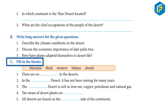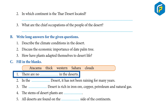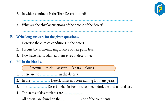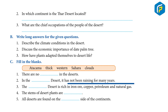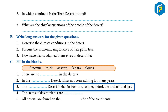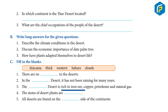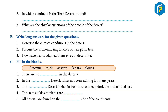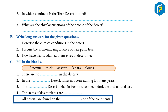C. Fill in the blanks: 1. There are no dash in the deserts. 2. In the dash desert, it has not been raining for many years. 3. The dash desert is rich in iron ore, copper, petroleum, and natural gas. 4. The stems of desert plants are dashed. 5. All deserts are found on the dashed side of the continent.